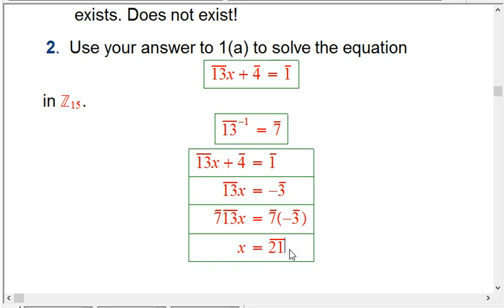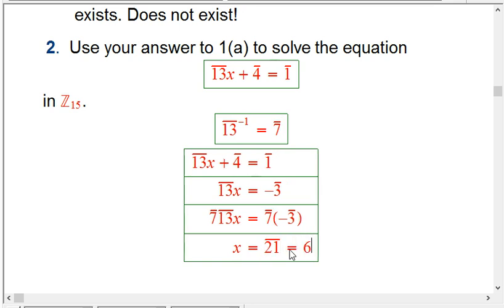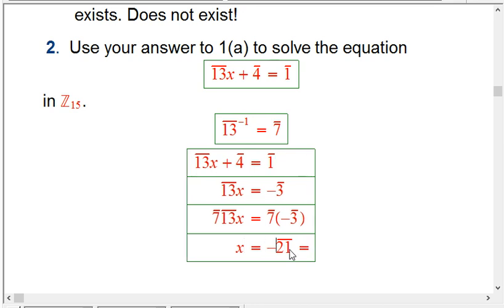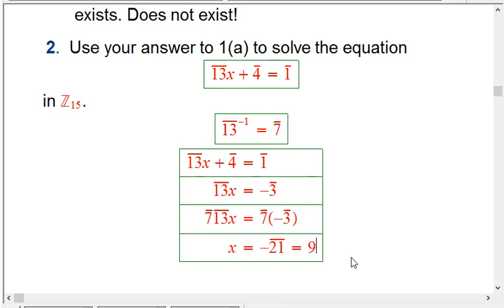So, the only thing is we haven't reduced that, but that's okay, because now we can reduce that at the end. Oh, minus 21. Yeah. You should have spoken up. Minus 21. Now, we have to reduce that, but that's equivalent to 9 mod 15. And we're done.